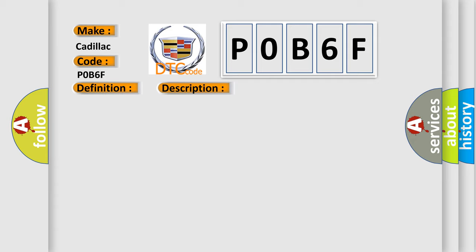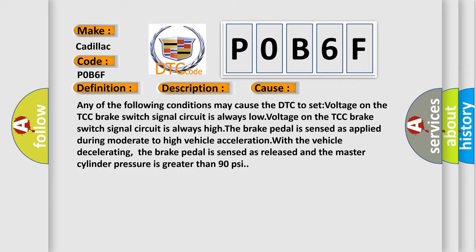This diagnostic error occurs most often in these cases. Any of the following conditions may cause the DTC to set voltage on the TCC brake switch signal circuit is always low voltage on the TCC brake switch signal circuit is always high.